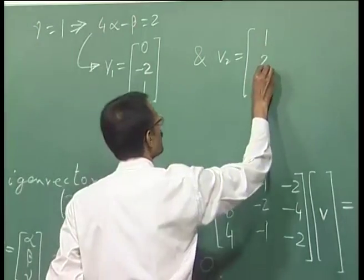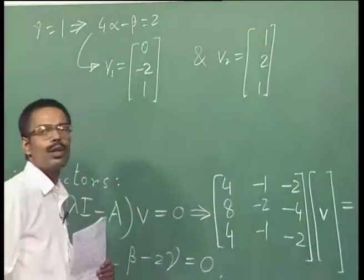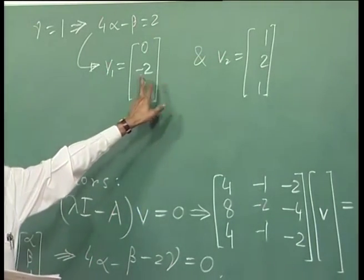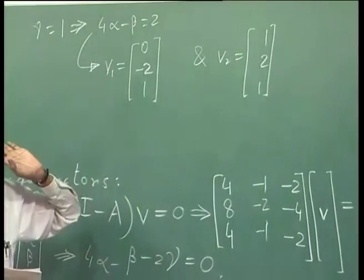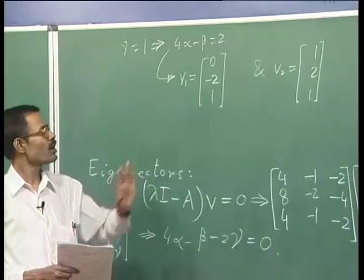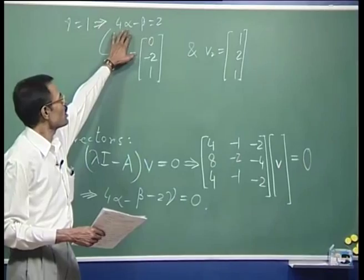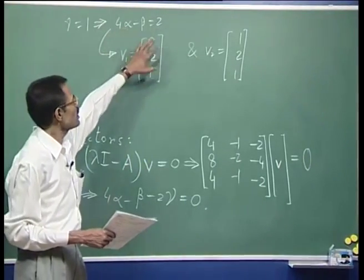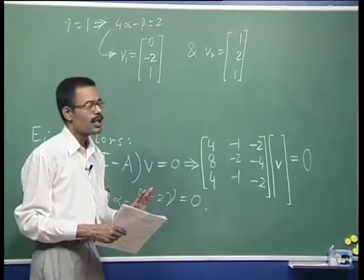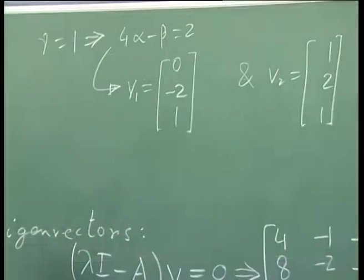So with alpha=1, beta=2, gamma=1 we have a second eigenvector. These are two linearly independent eigenvectors and only two you will get, because no other independent choice is possible. Any third choice of alpha will give something which is only a linear combination of these two. So in this case we have got only two eigenvectors, not a full set of three.